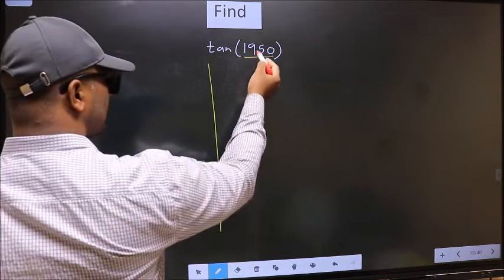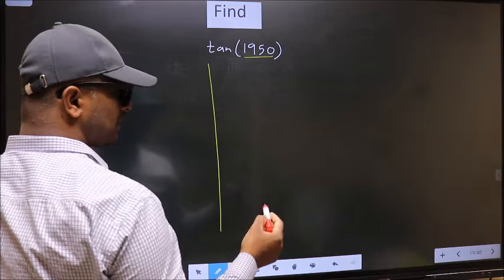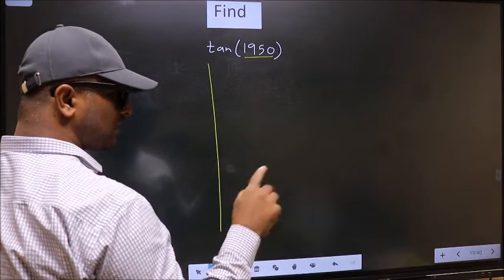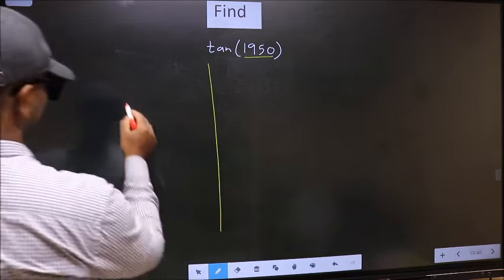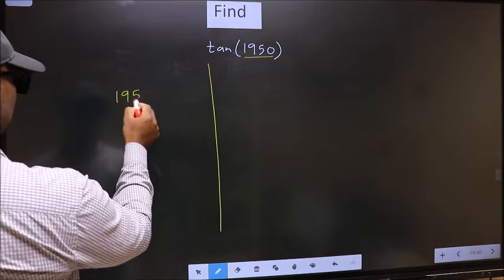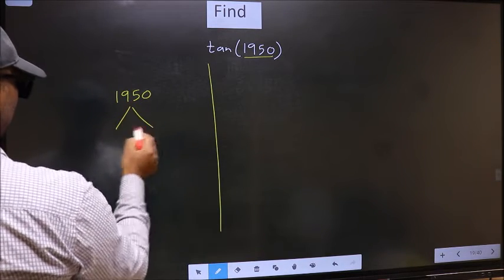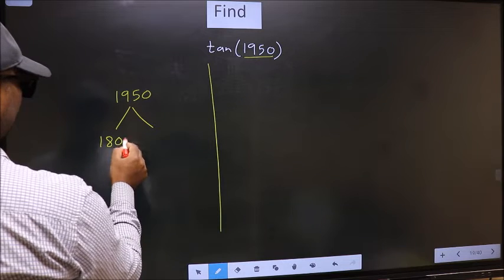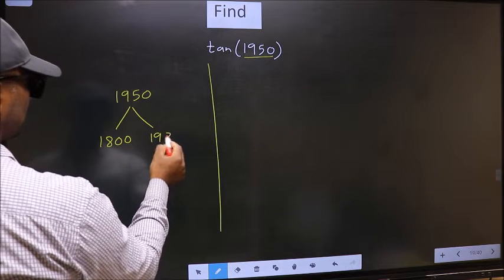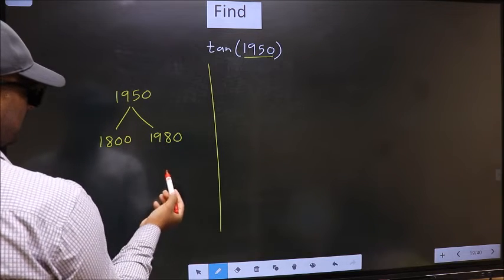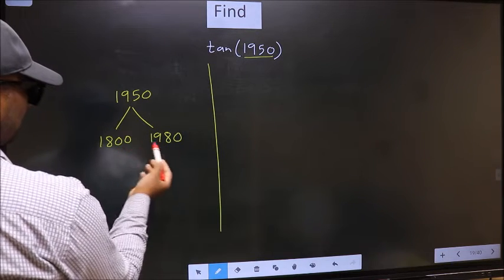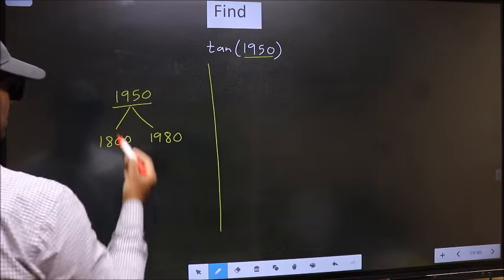We should check which two multiples of 180 the number 1950 lies between. 1950 lies between 1800 and 1980. This is 180×10 and this is 180×11. Between these two numbers, 1950 lies.